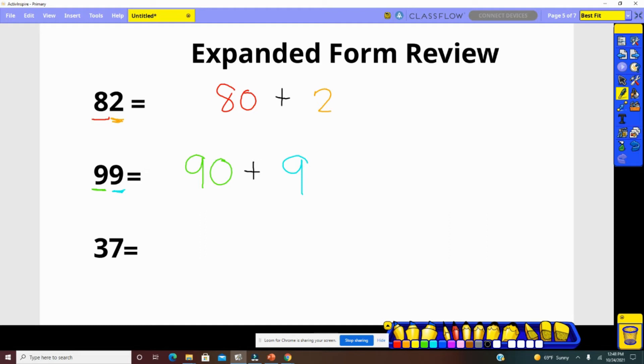Our last number, 37. The tens place has a value of 30. The 7 in the ones place has a value of 7. 30 plus 7 equals 37.